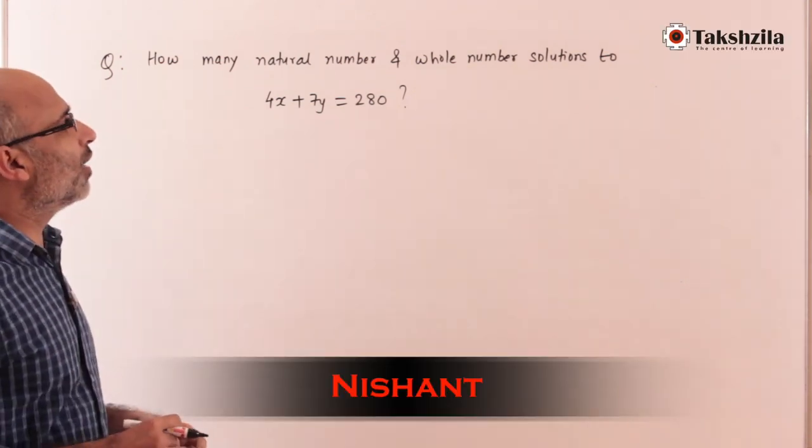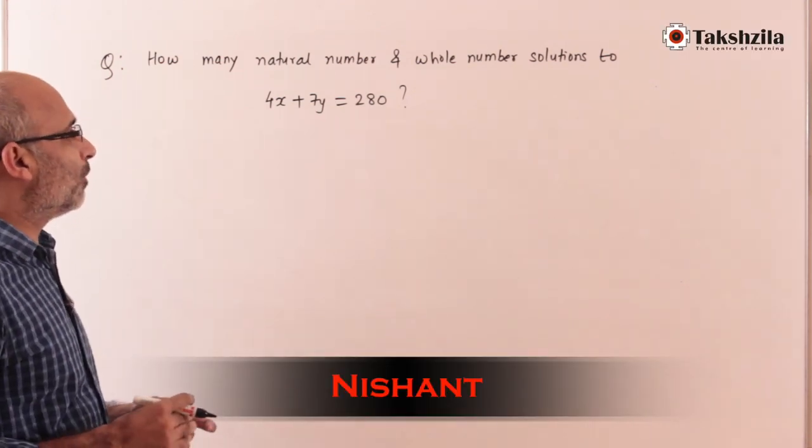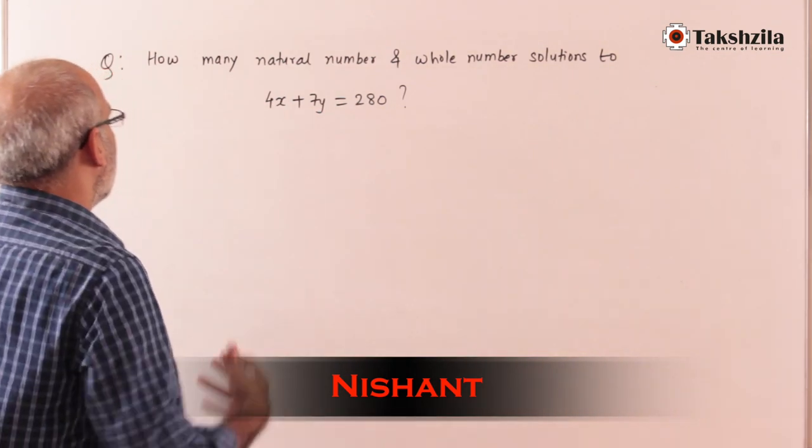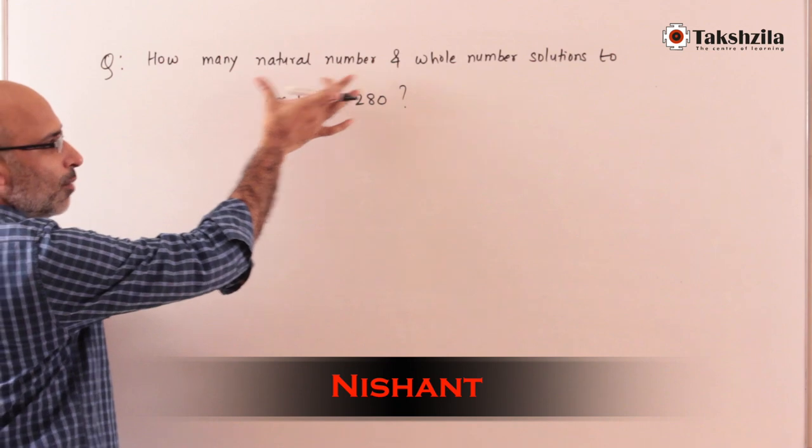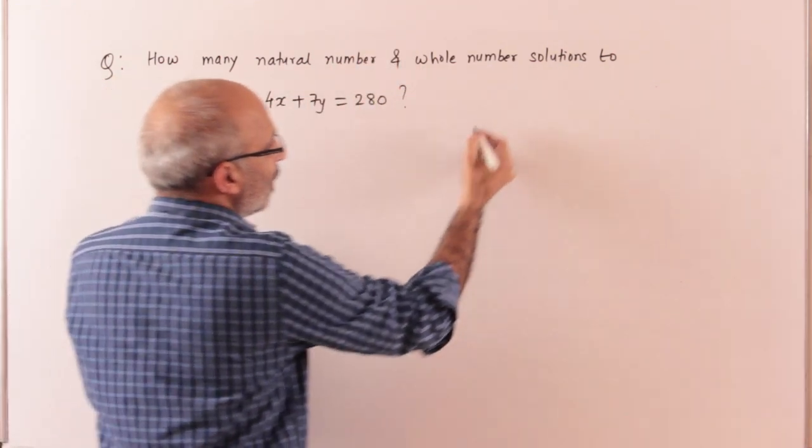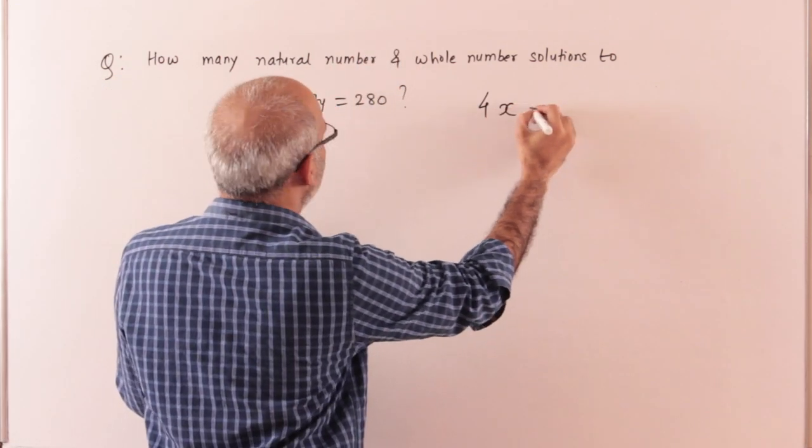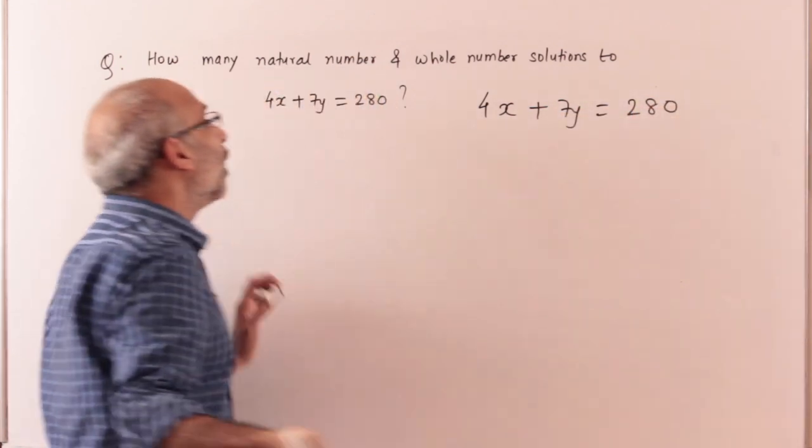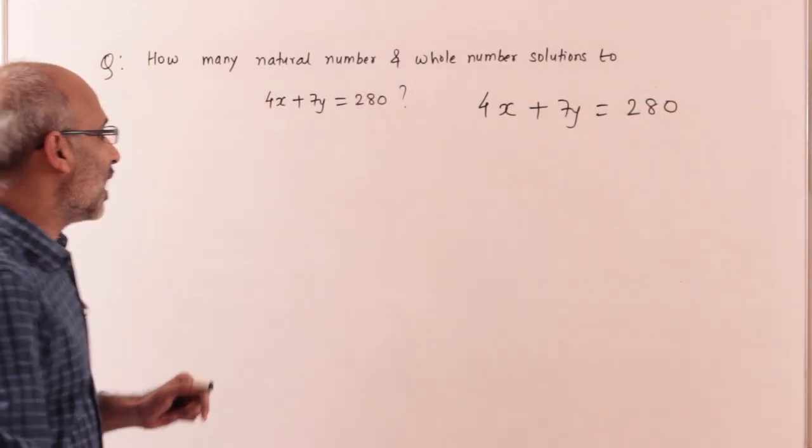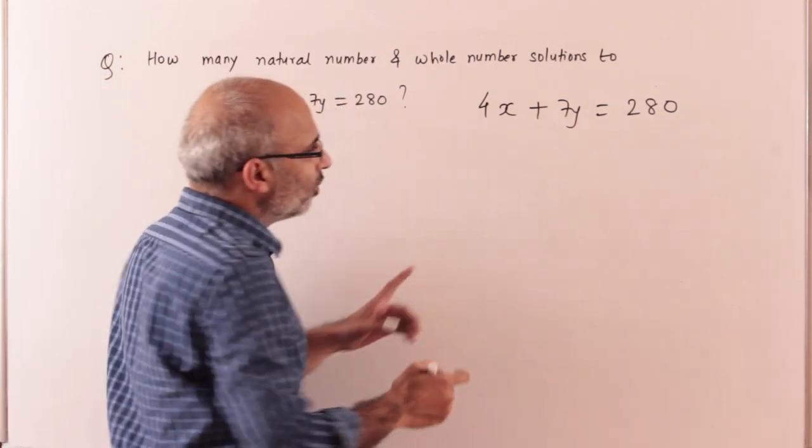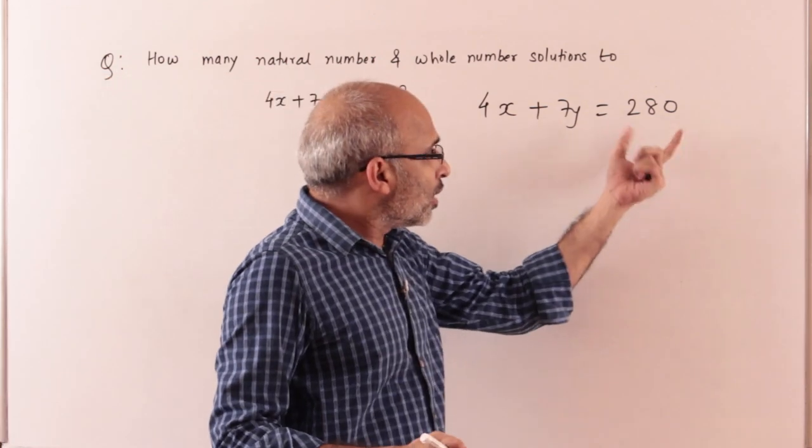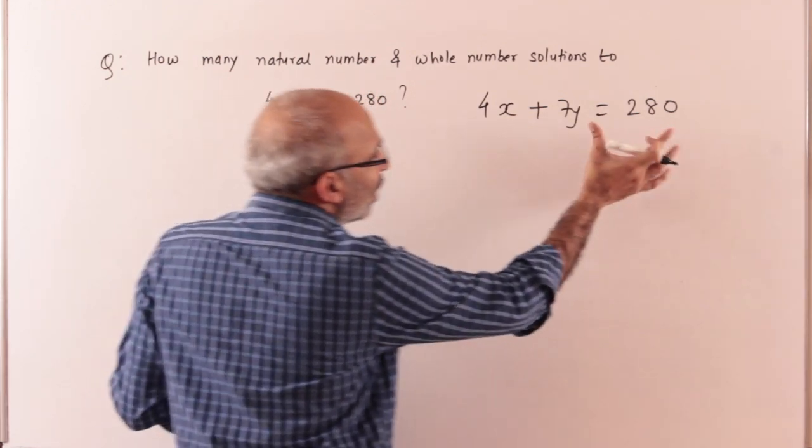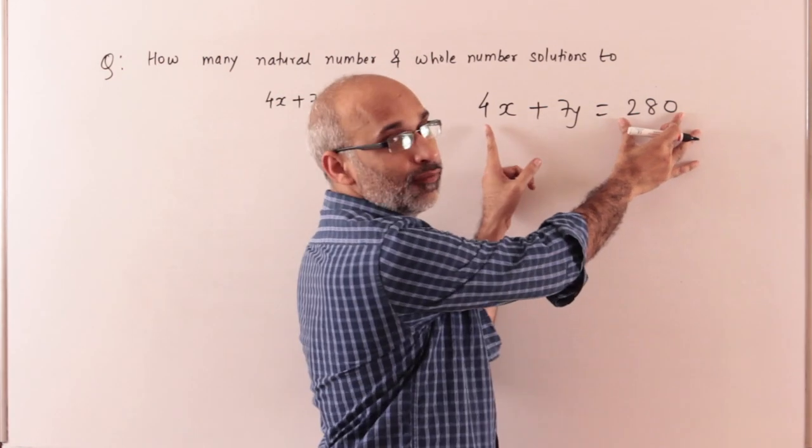How many natural number and whole number solutions to 4x plus 7y equal to 280? So 4x plus 7y equals 280. First, let's check: is 280 divisible by 4?